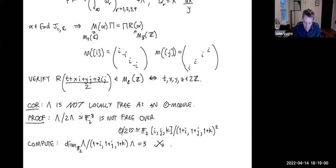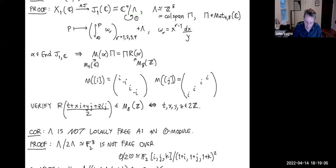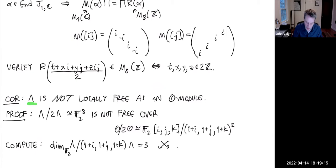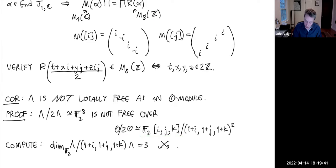A fun corollary: the lattice Λ is an O-module, but it's not locally free as an O-module — problems occur at 2. When you reduce mod 2, O/2O is a commutative ring with a big Jacobson radical; the image of the lattice modulo the Jacobson radical has F_2-dimension 3, which is a contradiction by Nakayama — it would lift to a rank-3 module, giving the wrong order of elements.